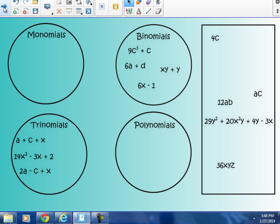Monomial, remember, could be a product of a variable and a number, like 4c. It could be two letters multiplied together, like ac. It could be a product of numbers and variables, like 12ab, 12 times a times b. Or it could be a product of a number and three variables, 36 times x times y times z, 36xyz. So those are four examples of monomials.